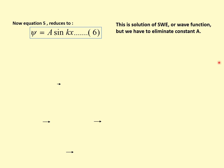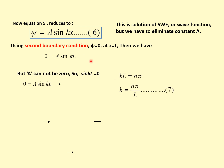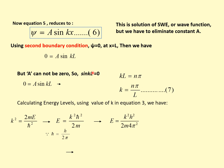Now we apply the second boundary condition ψ = 0 at x = L. Substituting gives A sin(kL) = 0. Since A cannot be zero (it is the coefficient), sin(kL) = 0, which means kL = nπ. Therefore k = nπ/L.